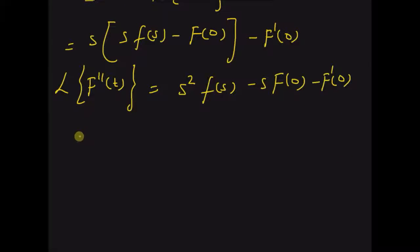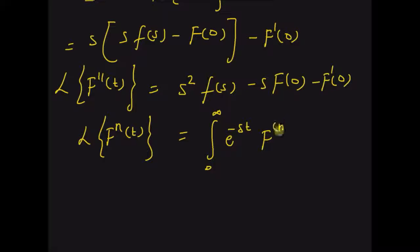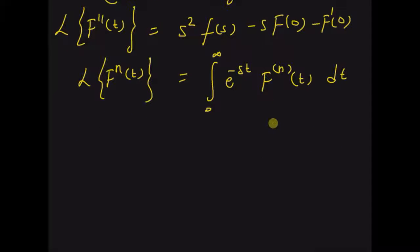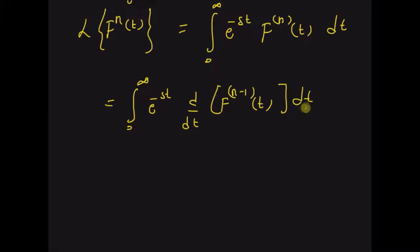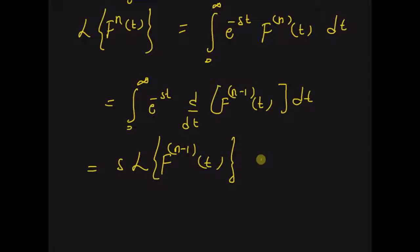Now, by using similar logic, we can derive the Laplace transform of the nth derivative. This is equal to, by definition, the integral from 0 to infinity of e^(−st) times the nth derivative of f(t) dt. The nth derivative of f(t) can be written as the derivative of the (n−1)th derivative. By using the formula for the Laplace transform of the first derivative, we can write this as s times the Laplace transform of the (n−1)th derivative, minus the initial value of the (n−1)th derivative.